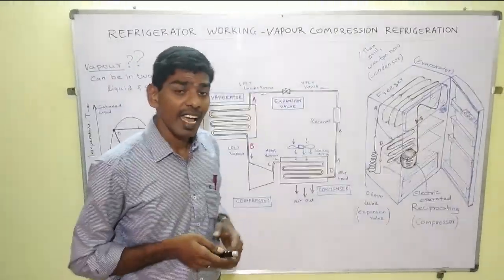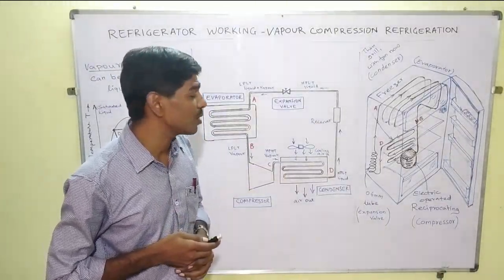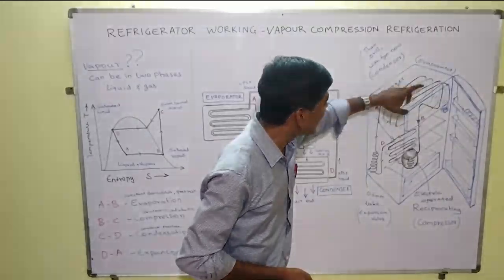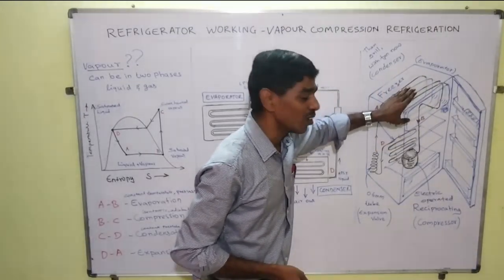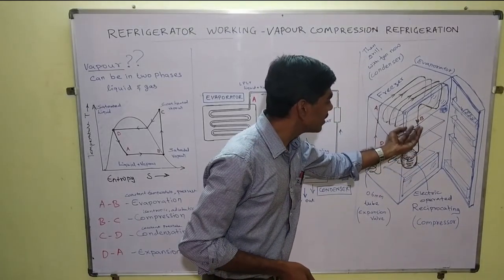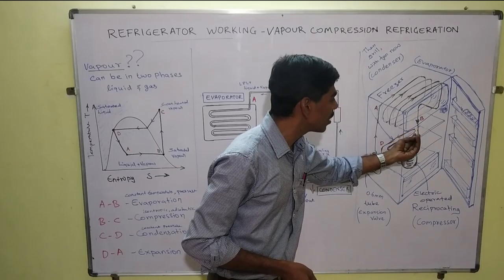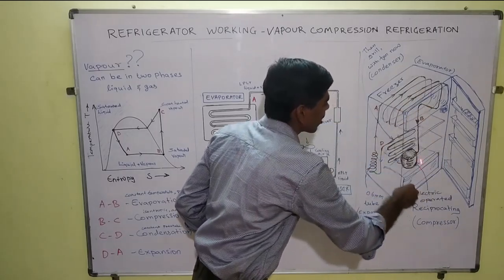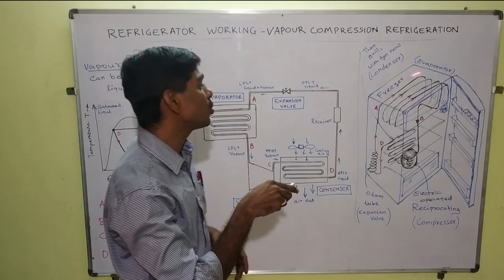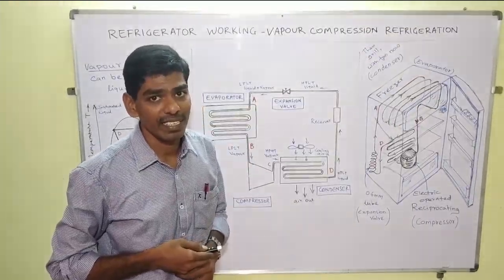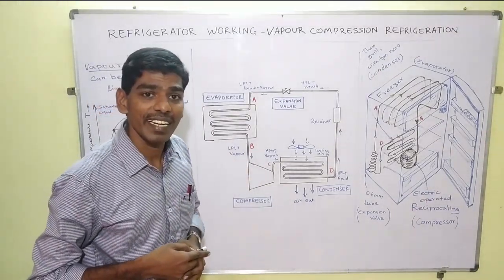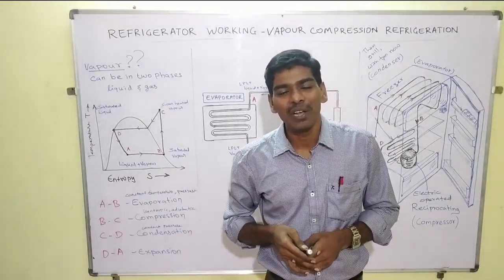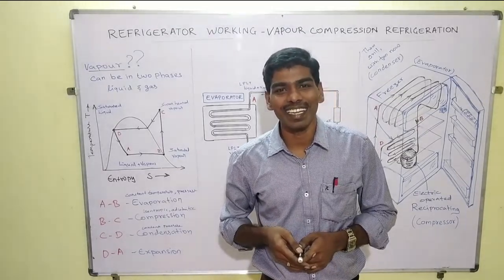In a single-door refrigerator, the freezer compartment is at the top and heat is extracted from that compartment alone. The air held inside warms up relative to the freezer compartment air, rises naturally, and creates natural circulation — which is why the freezer is placed at the top. This is how a domestic refrigerator works based on the vapor compression refrigeration system. In the next video, we will look at the vapor absorption refrigeration system.